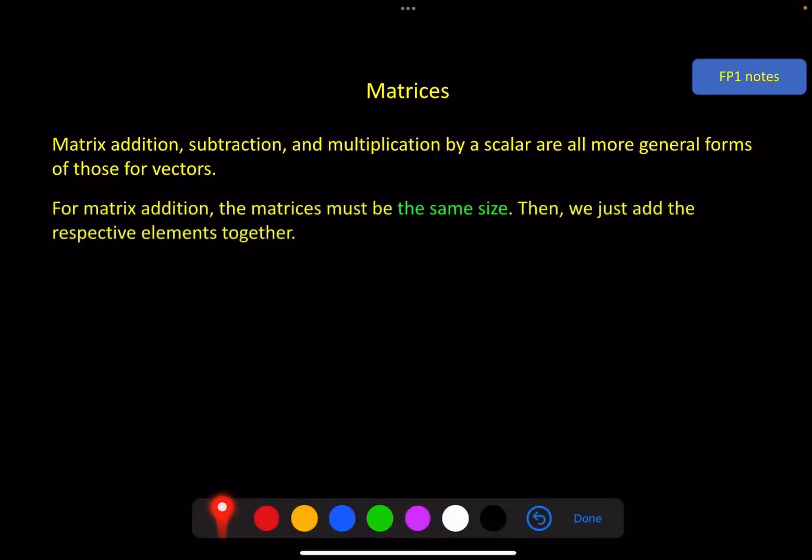For matrix addition, the matrices must be the same size. Then we just add the respective elements together. For example, with a 2 by 2 matrix, you have to have another 2 by 2 matrix. And then you just do A plus E to give this one, and B plus F to give this one, and so on.